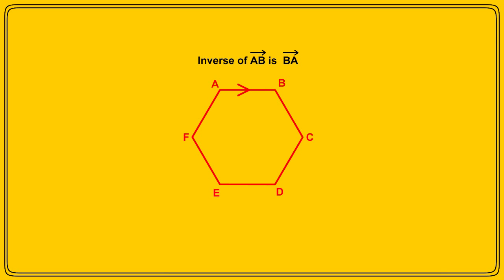But what if we are referring to the vectors by the points they define on a diagram? Well, let's go back to our old friend the hexagon. The inverse of vector AB is vector BA. Notice we change the order of the letters, not the direction of the arrow above the letters. So the inverse of vector FA is vector AF, and the inverse of vector CB is obviously vector BC.